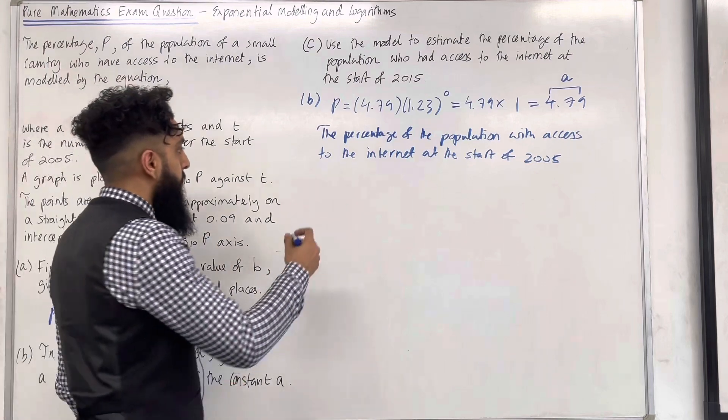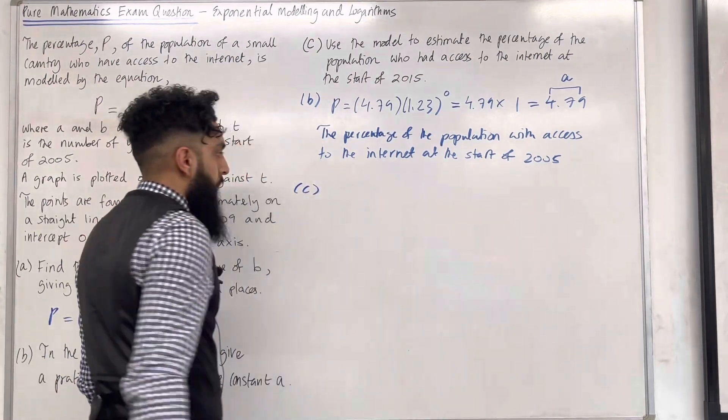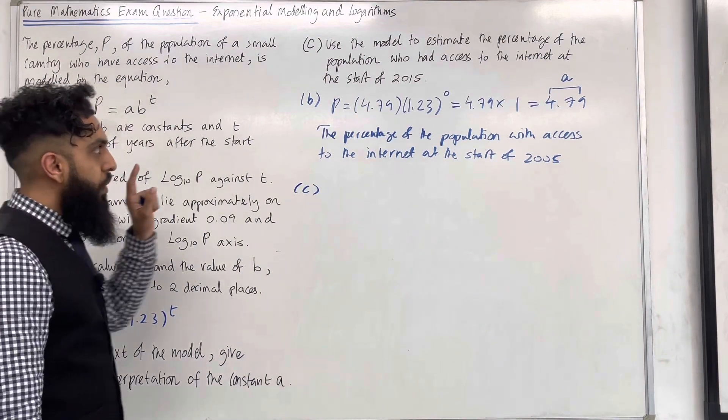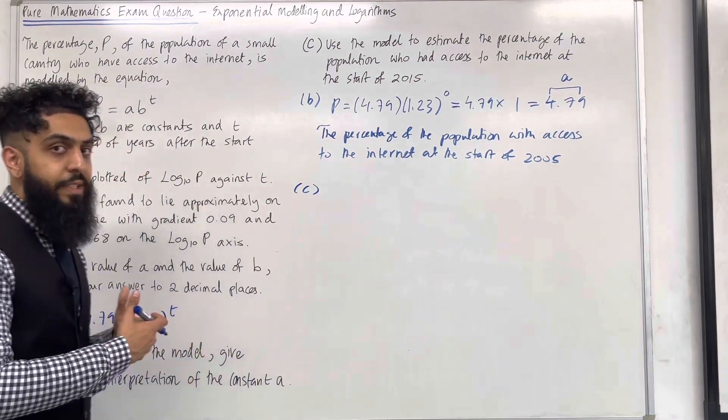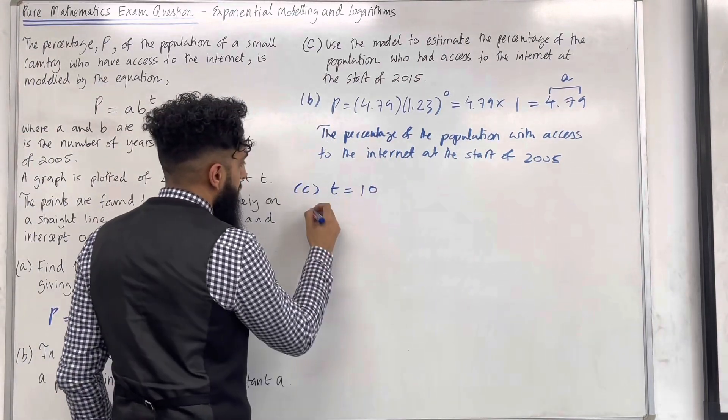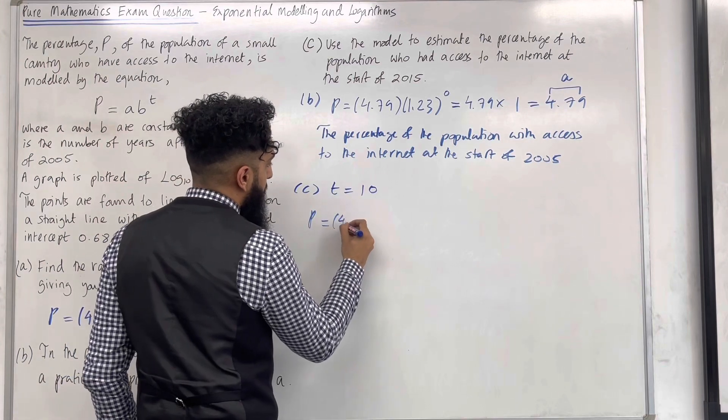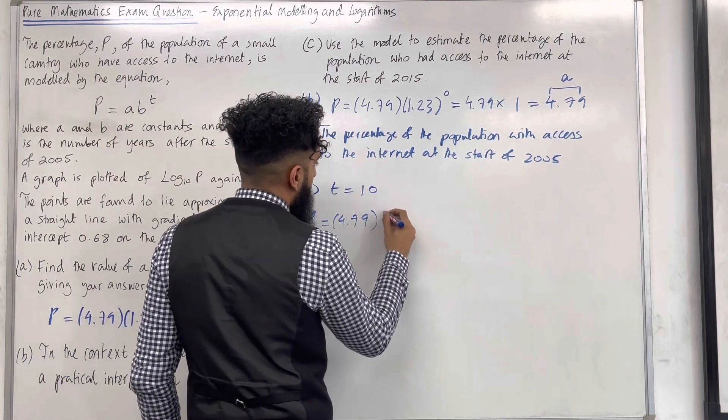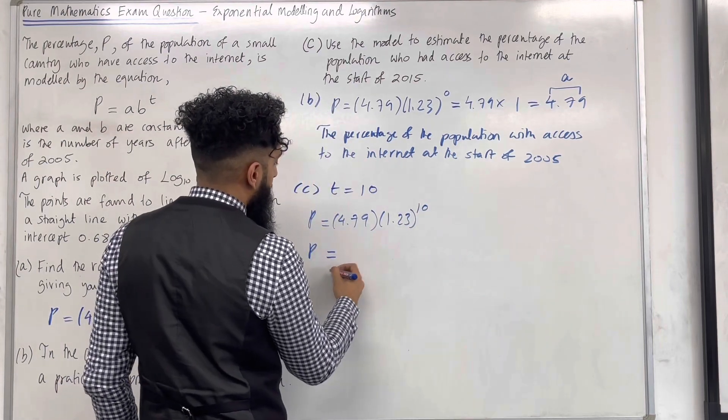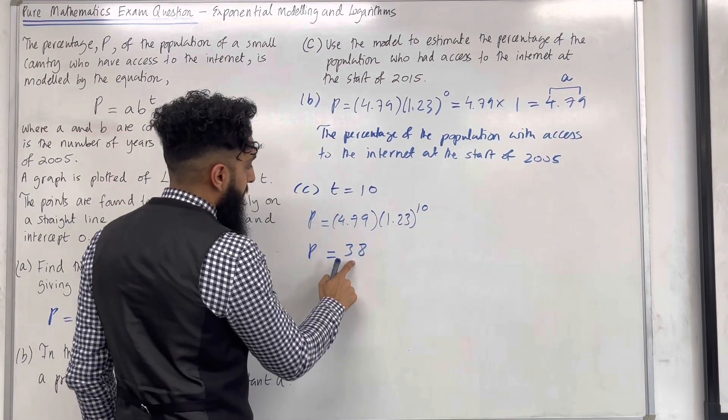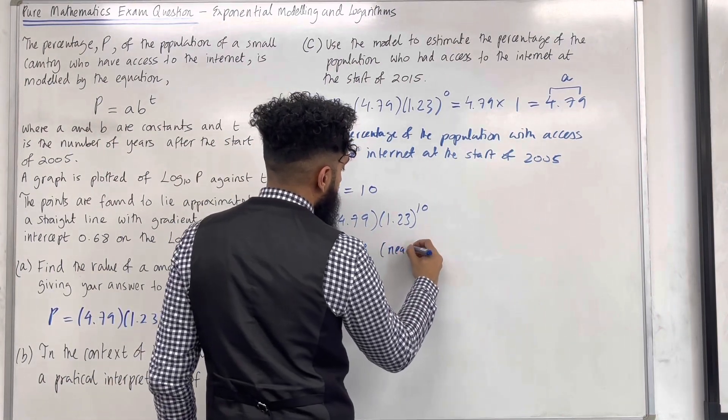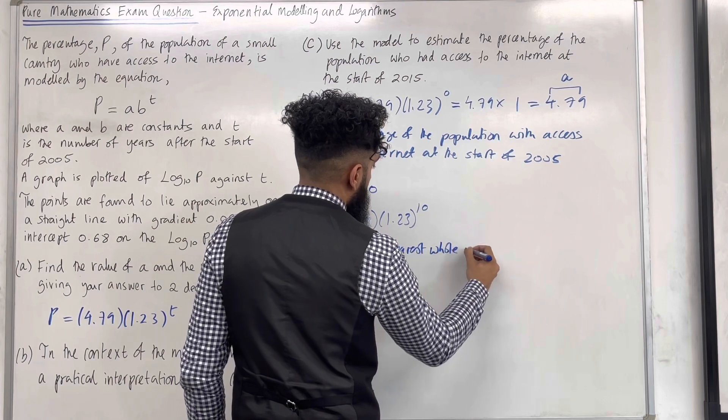Now the solution to part C. The model started in 2005, so we're going from 2005 to 2015, so we're looking at 10 years later. So we need to substitute T equal 10 into our model. So I've got P equal 4.79 multiplied by 1.23 to the power 10. So if I put this into my calculator, I get 38%, so that there is the answer to the nearest whole number.